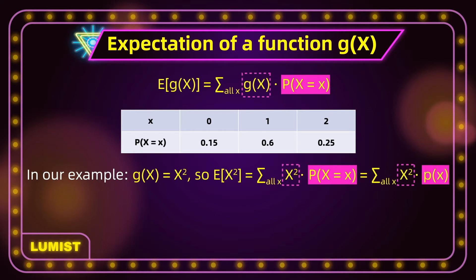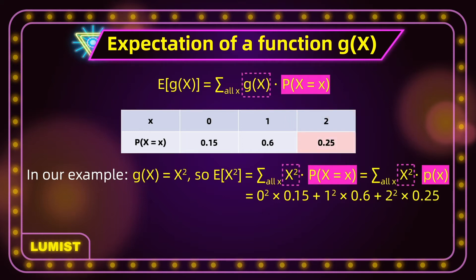So that gives us: 0² × 0.15, plus 1² × 0.6, plus 2² × 0.25. When we calculate this, we get 1.6. So the expectation of x² in this case is 1.6.